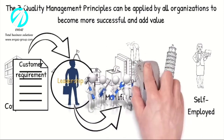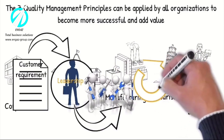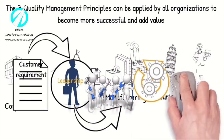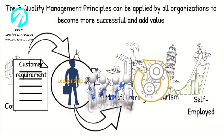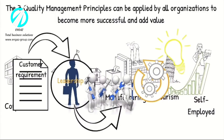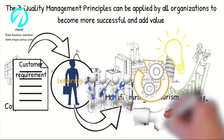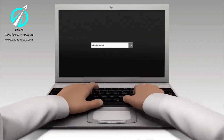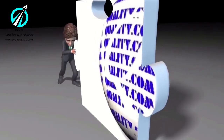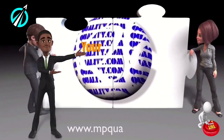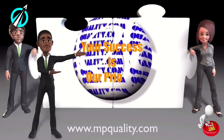Employees would be empowered, competent and equipped with capable processes to achieve the customer's expectations. The effectiveness and efficiency of the process will be continuously monitored against the objectives, and ongoing improvements initiated, promoting mutually beneficial supplier relationships. You are welcome to visit our website at www.mpquality.com for more information.